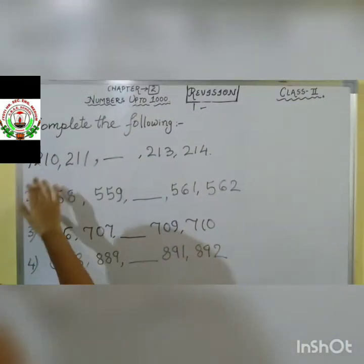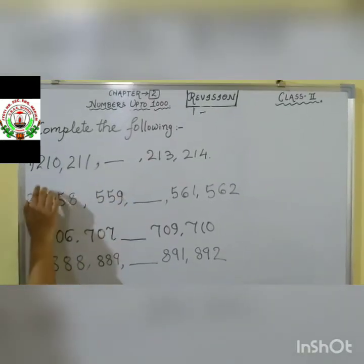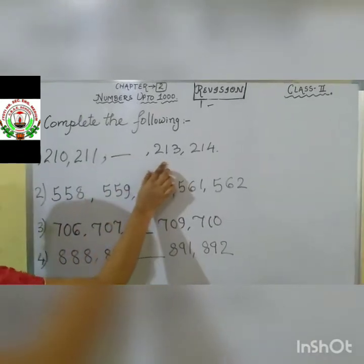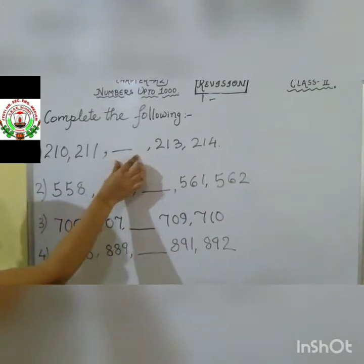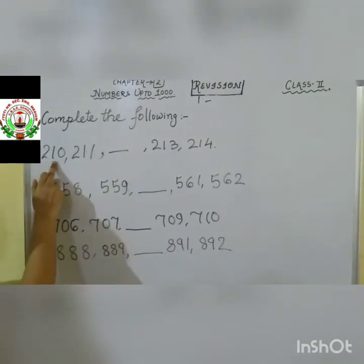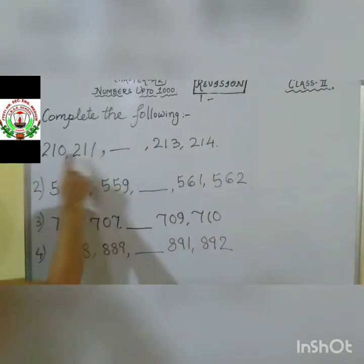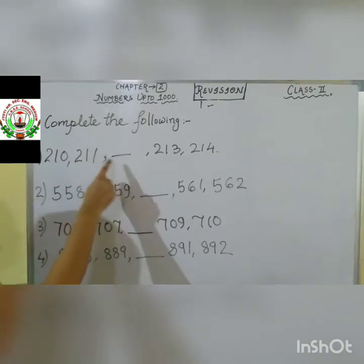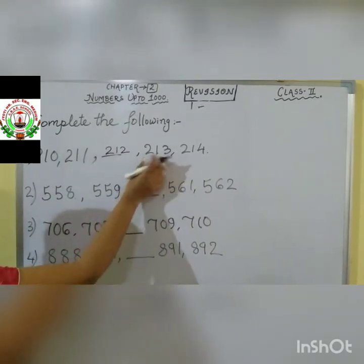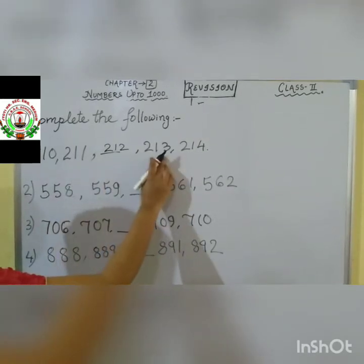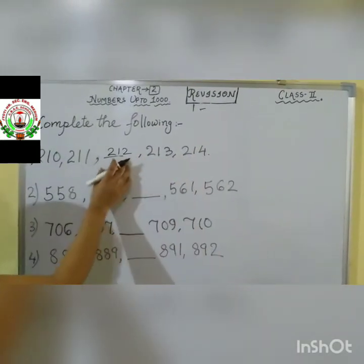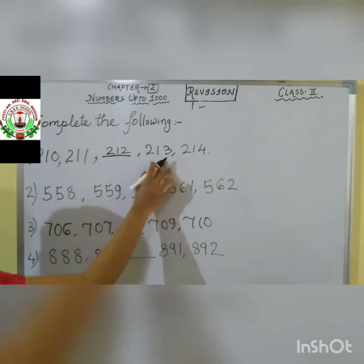Complete the following. We have to complete the sequence. Children, read it: 210, 211, blank, 213, 214. See children, you have to fill the missing blank. After 210 comes 211. After 211, which number will be coming? 200 + 12 = 212. Then 213, after that 214. In this way, you have to fill the missing number. See the sequence and complete it nicely.